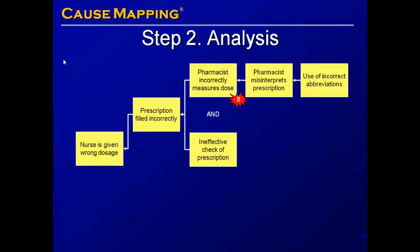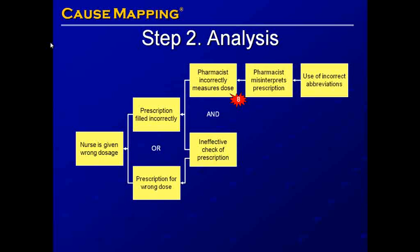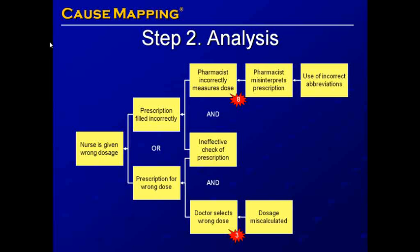Other than the prescription being filled incorrectly, the prescription may be for the wrong dose — also due to an ineffective check of the prescription — and the physician selecting the wrong dose, which is an error at step 3 of the process, potentially because the dosage was miscalculated.